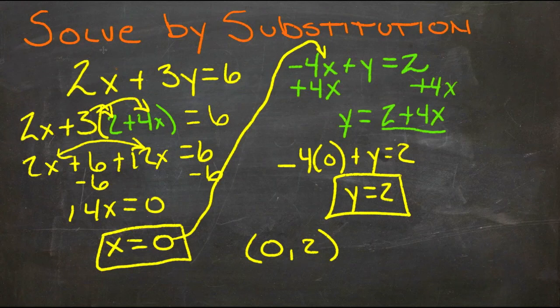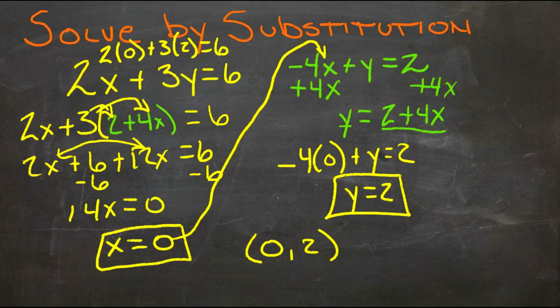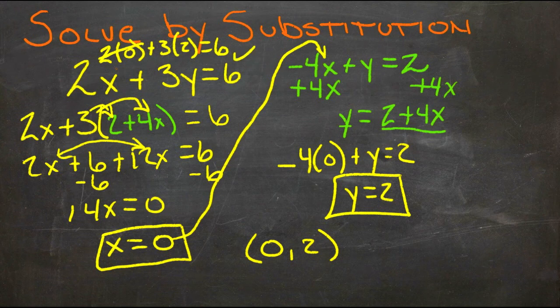If we plug 0 in here, we get 2 times 0 plus 3 times 2 equals 6. And obviously, 2 times 0 goes away, and 3 times 2 is 6, so it works for that one.